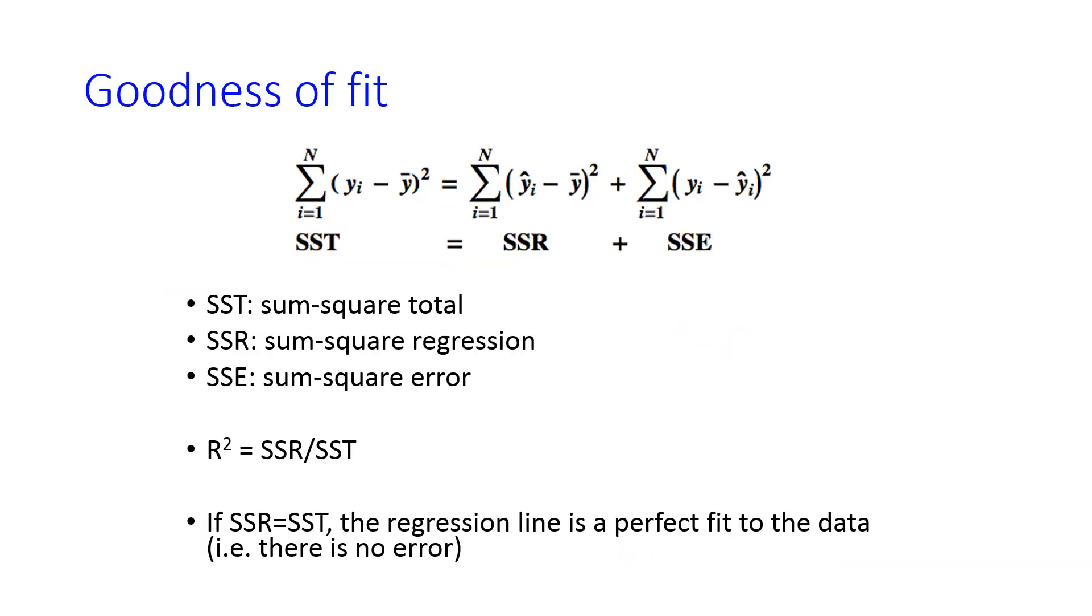When you do that, you also get out some information that can help you calculate the goodness of fit. And so, this is what Excel is doing when you tell it to display the r squared value on your trend line.